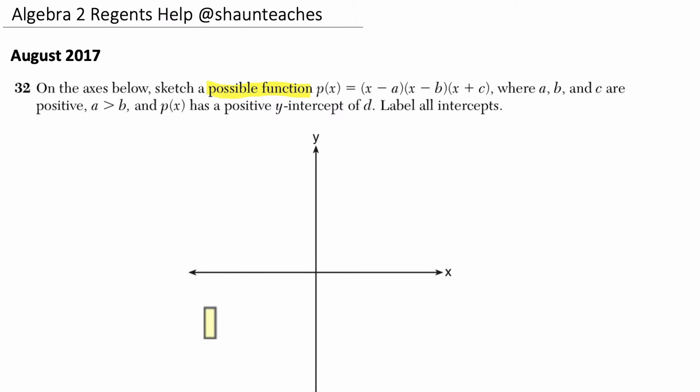Let's highlight that. P of x equals x minus a times x minus b times x plus c. So there's a polynomial. It's third degree. There's an x and an x and an x, so eventually we're going to multiply those three things. I'm thinking right away this is third degree because I'm going to have x cubed eventually.